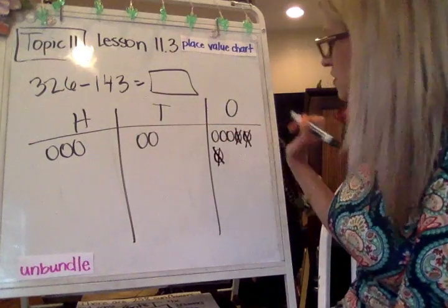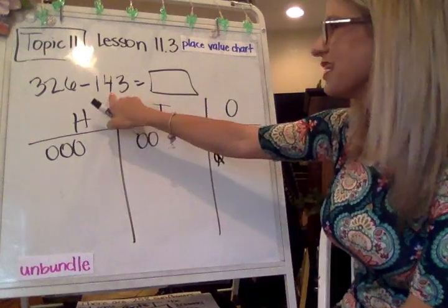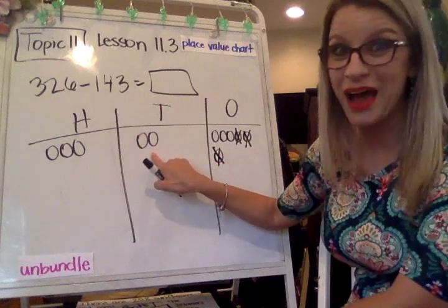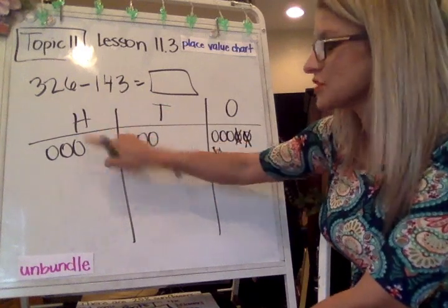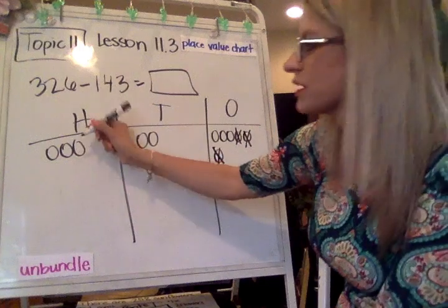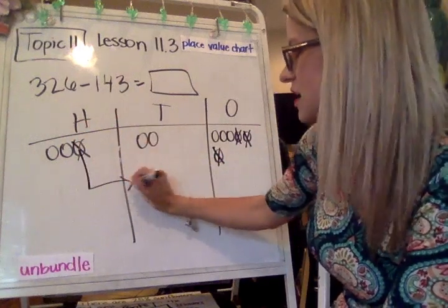And the first step is to take away 3 from the ones place. 1, 2, 3. All right, that was easy. Now I need to take away 4 from my tens. I don't have 4 in my tens place. So I'm going to have to unbundle one of my hundreds.